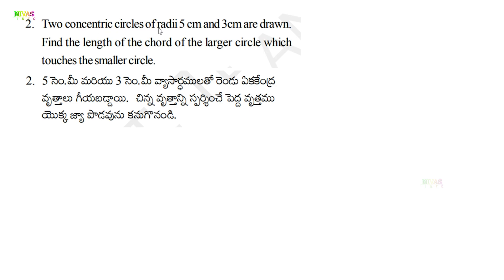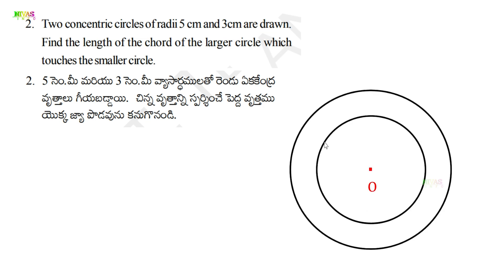Two concentric circles with radii 5 centimeters and 3 centimeters — we draw both circles from the same center point O. This is the 3 centimeter circle and this is the 5 centimeter circle.